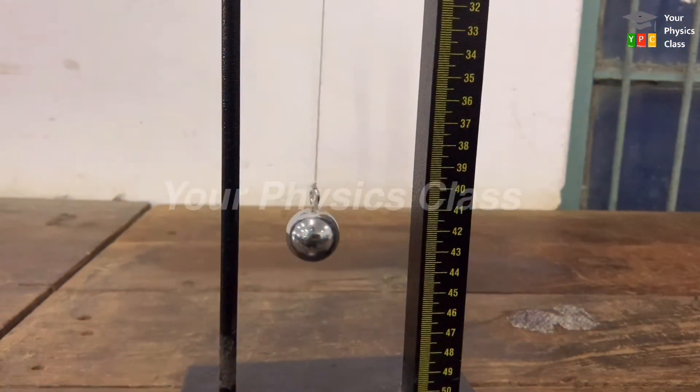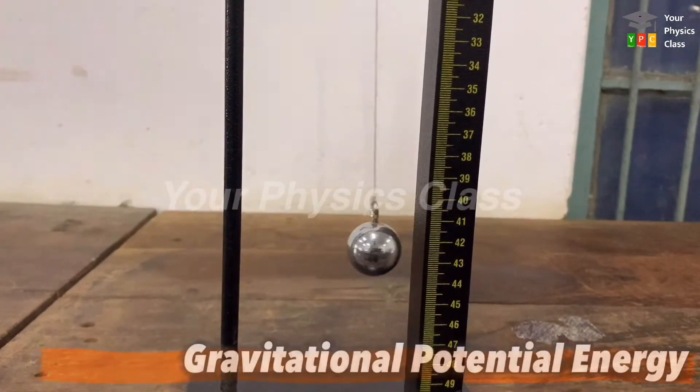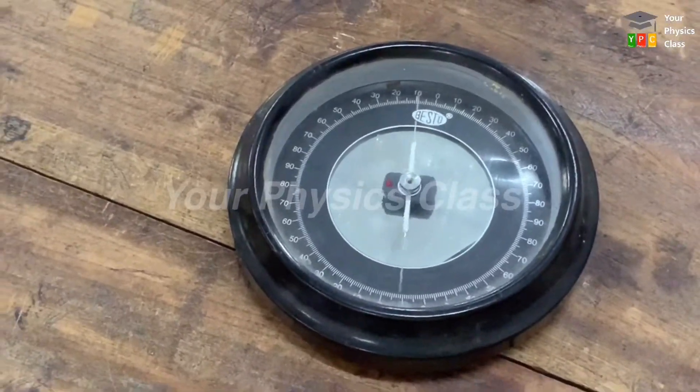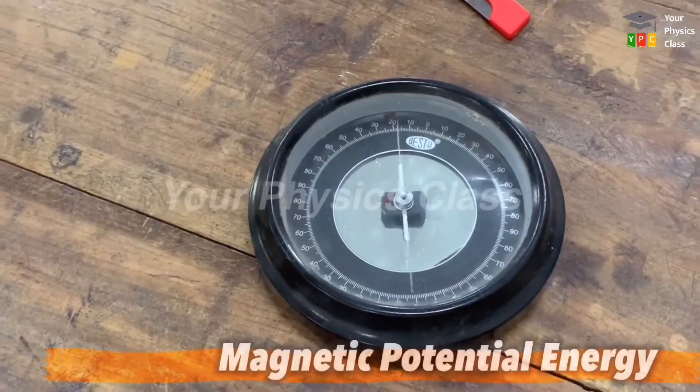If this is a simple pendulum, it has gravitational potential energy. If this is an oscillating magnet, it has magnetic potential energy.